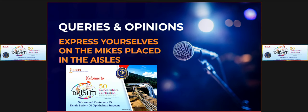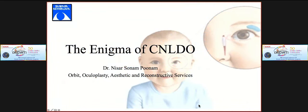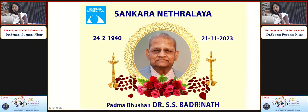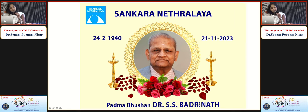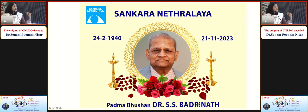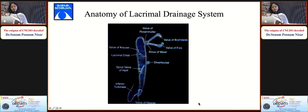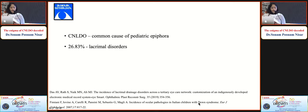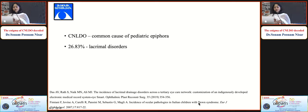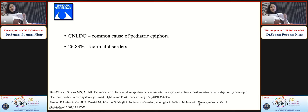Thank you, Anju, for that introduction. I'd like to thank the organizing team of KSOS and Dr. Anju for inviting me. My topic is the enigma of CNLDO. I'd like to pay my respects to Dr. Badrinath, and I feel privileged to be part of his legacy at Shankar Netralaya. Dr. Soumya has already spoken in detail about the anatomy of the lacrimal drainage system. CNLDO - congenital nasolacrimal duct obstruction - is one of the most common causes of pediatric epiphora and accounts for about 26% of all disorders of the lacrimal system. The incidence is higher in Down's syndrome babies - as high as 22 to 36%.